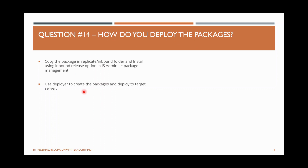How do you deploy packages? Once you have a package created and exported as a ZIP file, you can put it in the Integration Server replication/inbound folder. In IS admin under Package Management, there is an option called Install Inbound Releases. The ZIP file you copied will appear there and you can click Deploy. Another way is webMethods Deployer — a deployment tool using which you can select components from a source server and deploy to any target server.